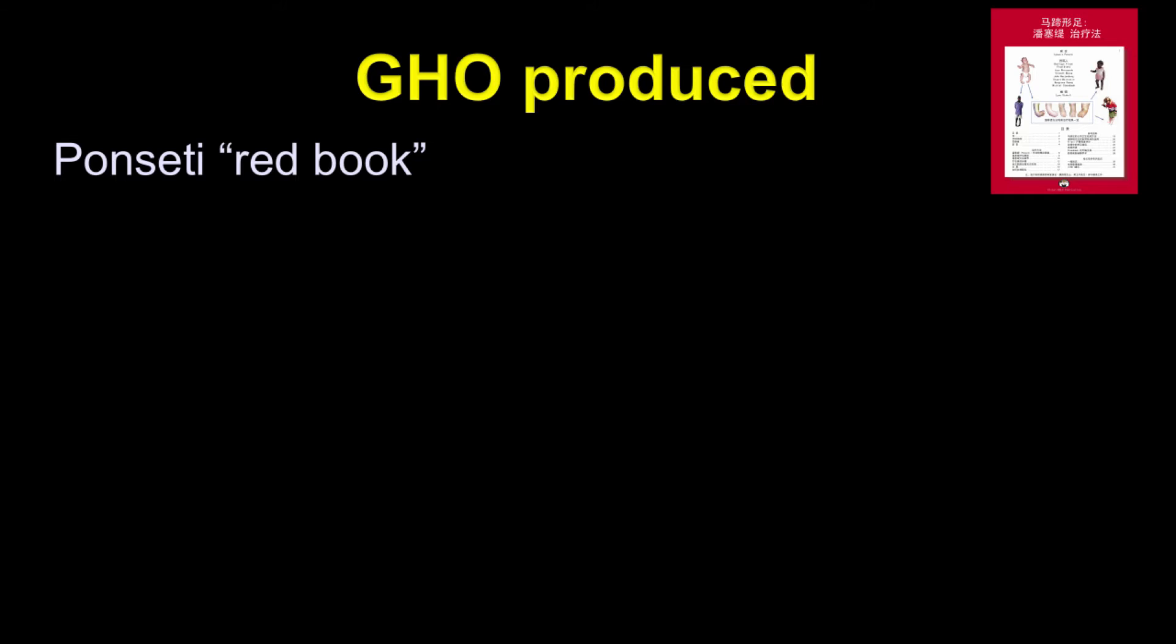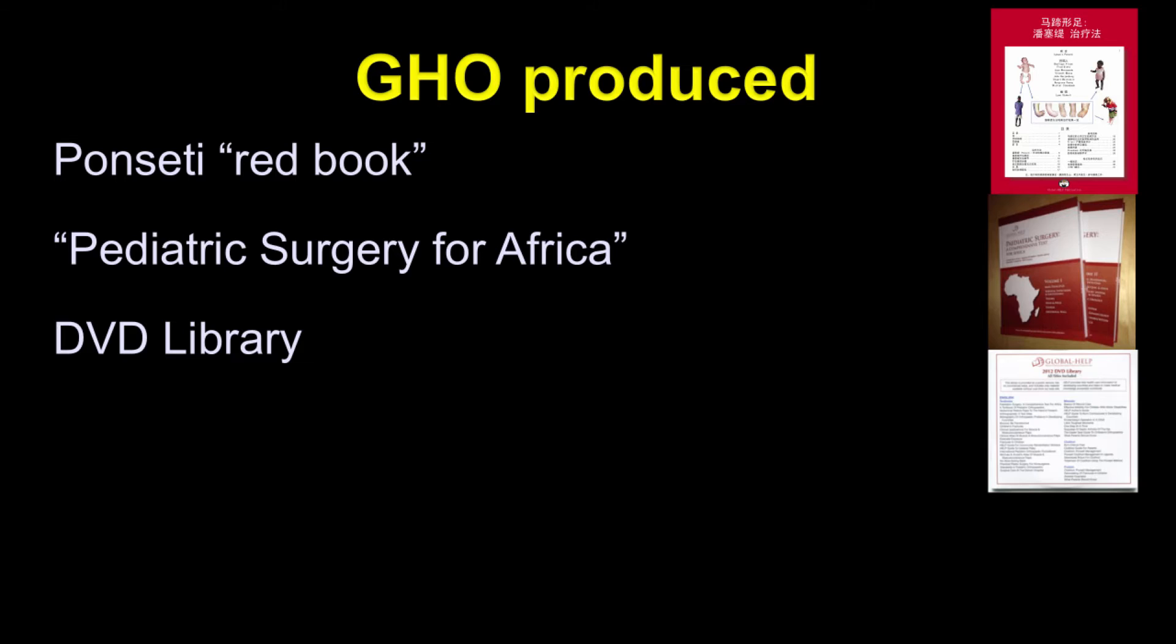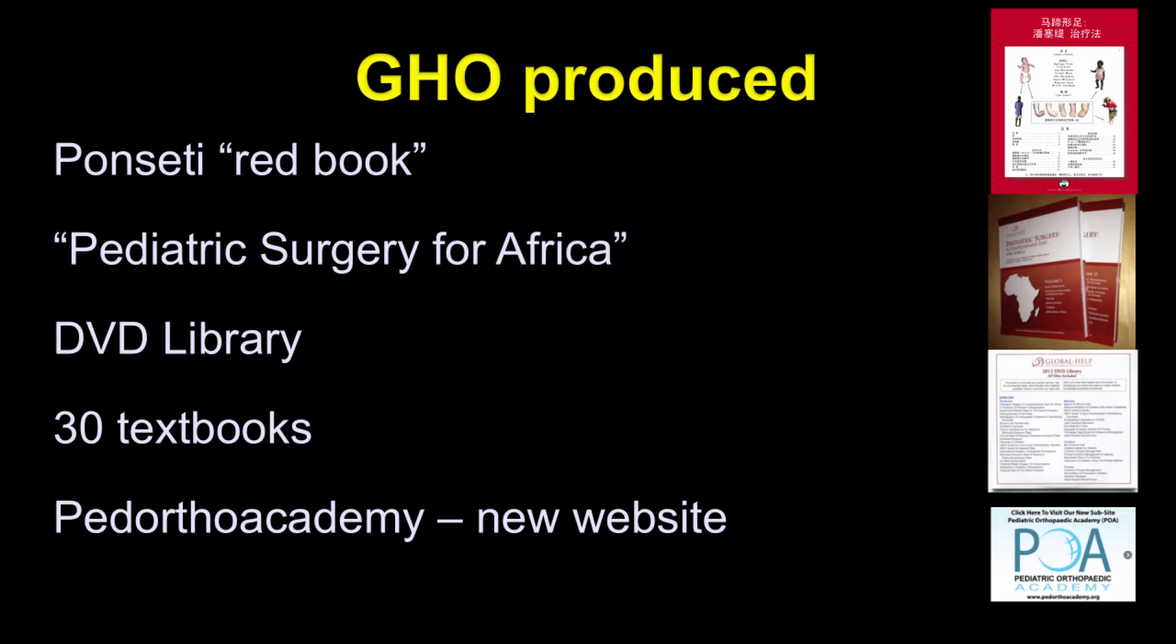Global Health Organization has also produced the Ponseti Red Book, used around the world in 35 languages; Pediatric Surgery for Africa, with 10,000 hard copies distributed and over a million downloads; a DVD library available for a dollar; 30 textbooks; and the new website for distribution of pediatric orthopedic information.